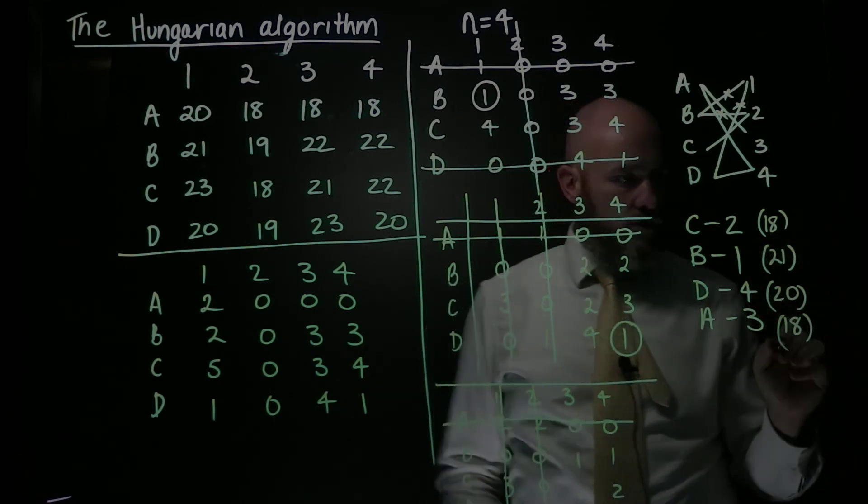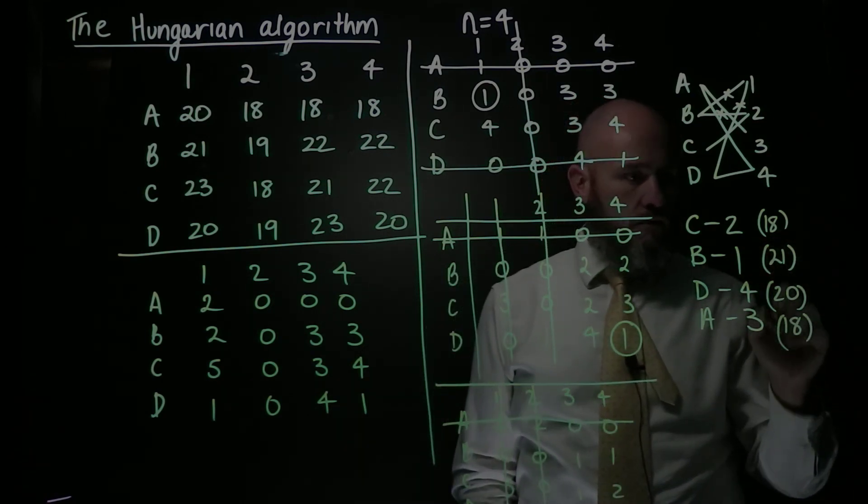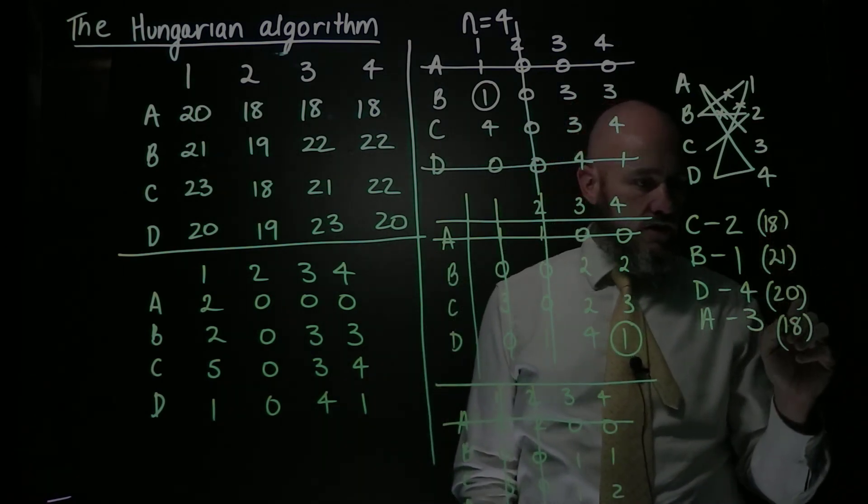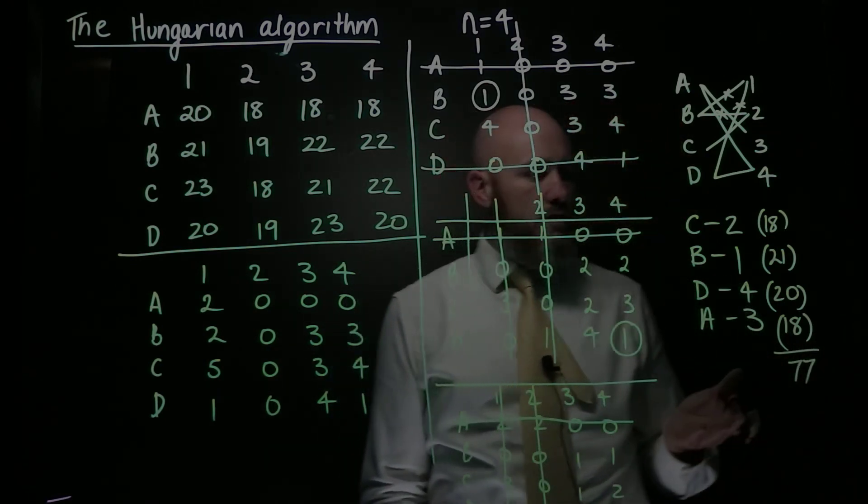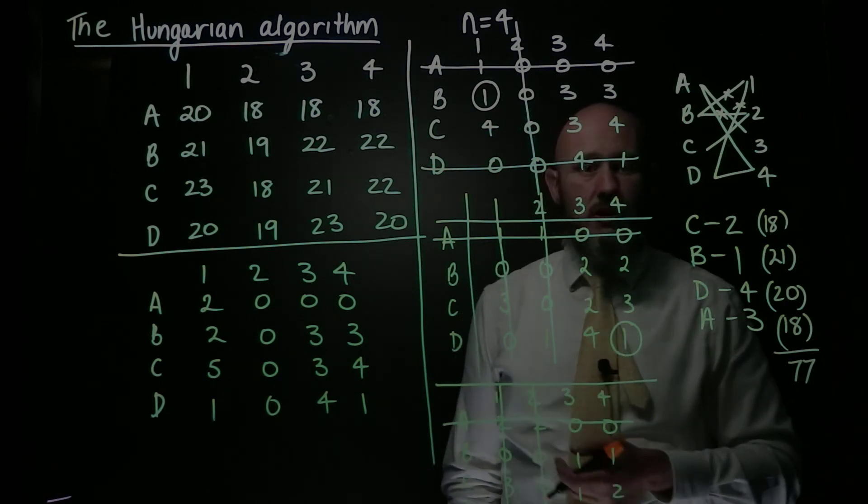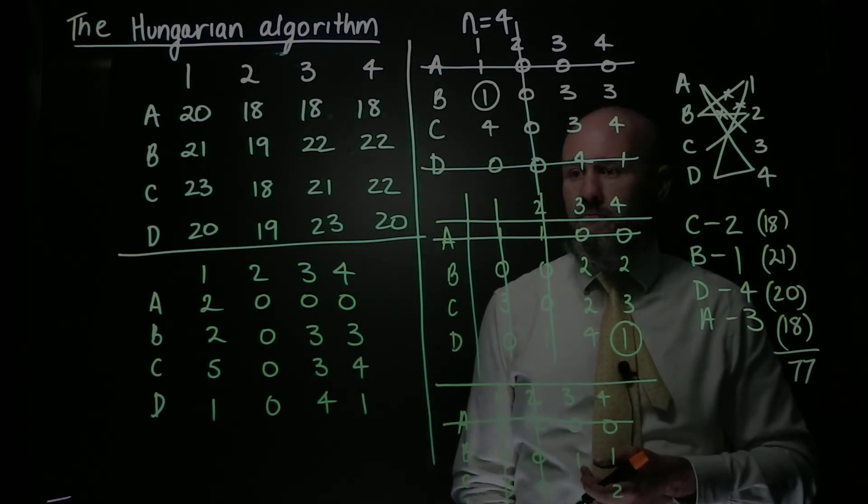And when I add all those up, I get 40, 50, 60, 76, 77. It gives me an overall minimum of 77. And that is the best I can do, because I've correctly followed the Hungarian algorithm. All the best.